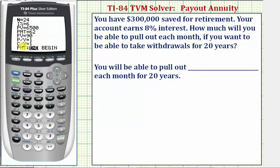We'll enter all the values except the payment, which we'll come back and solve for. N is equal to the total number of compounds over the total time period, so we're assuming interest is compounded monthly over 20 years, so N is equal to 20 times 12 or 240. We can just enter 20 times 12, press enter, and it will calculate that value for us.